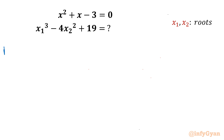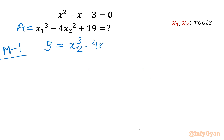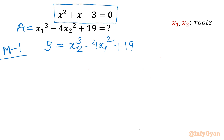I will demonstrate two different ways to attempt this problem. Let me write Method 1. I will call our expression which we have to evaluate as 'a', and a similar expression — just replacing the roots — as 'b': x2³ - 4x1² + 19, called b. From the quadratic equation, using Vieta's formulas, I can write two equations: the sum of roots and the product of roots.